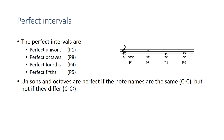Looking first at unisons and octaves, we can tell if they're perfect if their note names are identical — C and C, or C and C. But not if they're different: C and C-sharp is no longer perfect, and C and C-flat is not perfect either. Perfect means they have the same letter name.